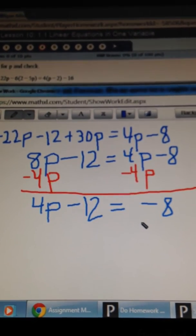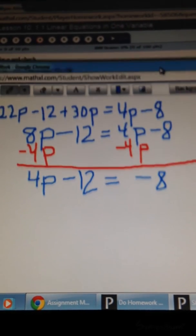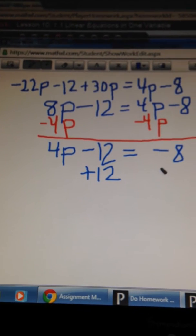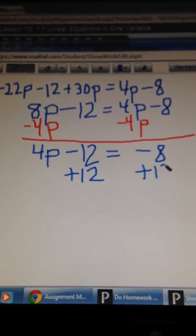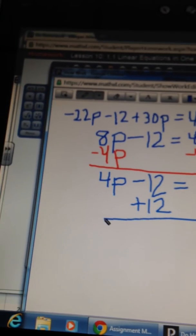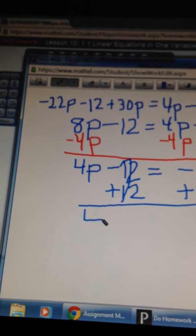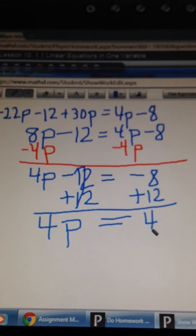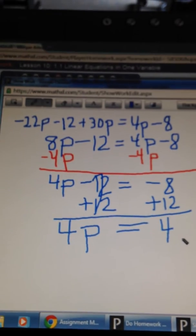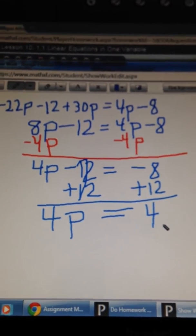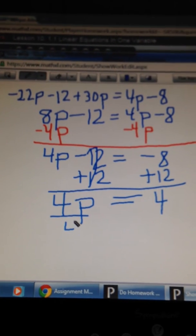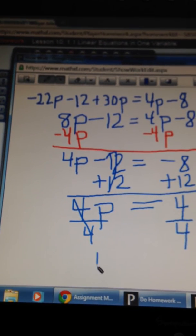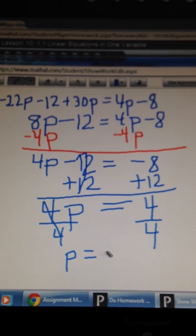Now to finish solving this equation you would need to add 12 to both sides. So we'll add 12. So we have 4p equal to positive 4. Now to solve for p, divide both sides by 4. Therefore, p is equal to positive 1.